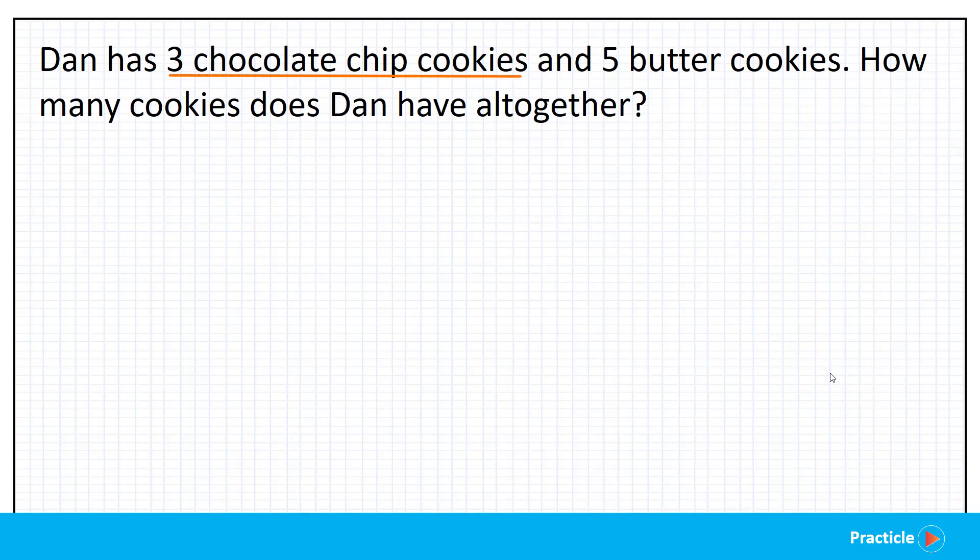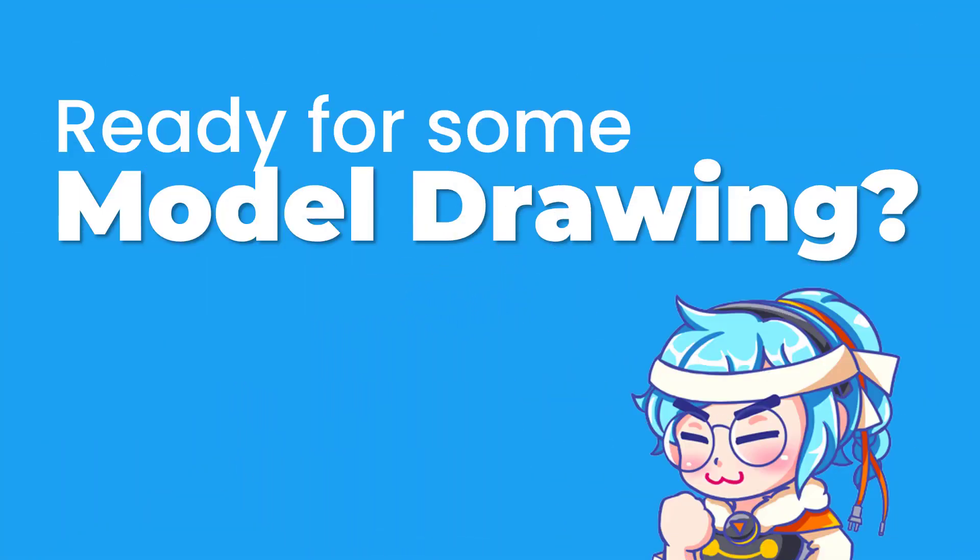Since we already know that one part of the model is going to represent the 3 chocolate chip cookies, and the other part of the model is going to represent the 5 butter cookies, we need to compare the numbers 3 and 5, and decide which bar is the longer one. So what do you think? 5 is definitely greater than 3, correct? So looks like the longer bar will be the one that represents the butter cookies. Did you get that? If you got it, great job! Give yourself a pat on the back.